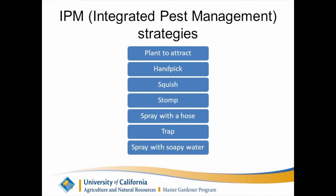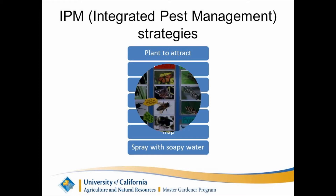The seven IPM strategies are: plant to attract, hand pick, squish, stomp, spray with a hose, trap, and spray with soapy water. Those are our objectives for you in these upcoming lessons on beneficials and pests.